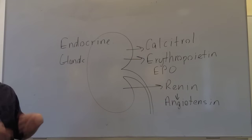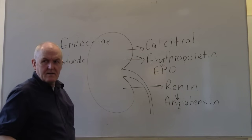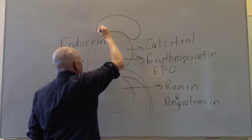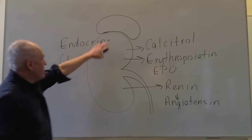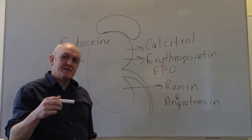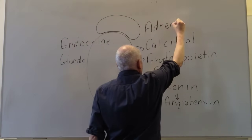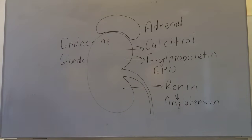As well as filtering blood and making urine, the kidney has endocrine functions. The kidney 'wears a hat' — just on top of each kidney there's a structure called the suprarenal gland, or as we now call it, the adrenal gland. There are two adrenal glands, one on top of each kidney.